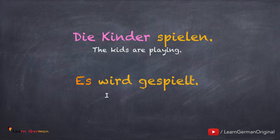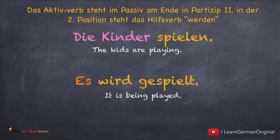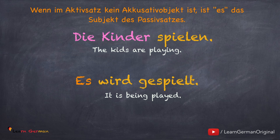Was passiert mit Sätzen ohne Akkusativobjekt? Hier ist ein Beispiel: Die Kinder spielen. In Passiv: es wird gespielt. Das Subjekt die Kinder fällt im Passiv weg. Das Verb steht am Ende in Partizip 2, und wenn im Aktivsatz kein Akkusativobjekt ist, also kein Täter ist, ist es das Subjekt des Passivsatzes.